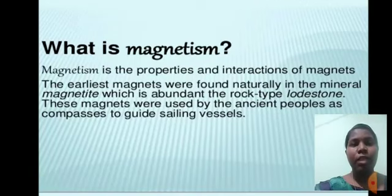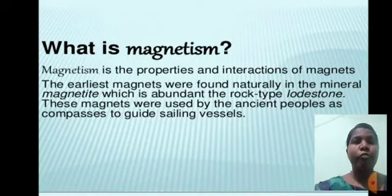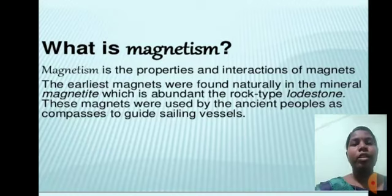Magnetism is the properties and interactions of magnets. The earliest magnets were found naturally in the mineral magnetite, which is abundant in the rock type lodestone.